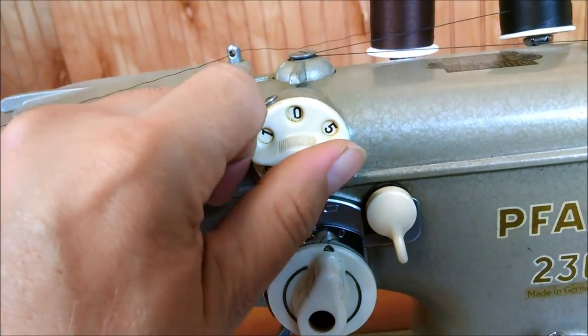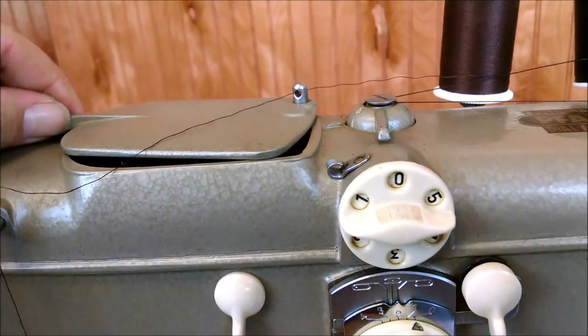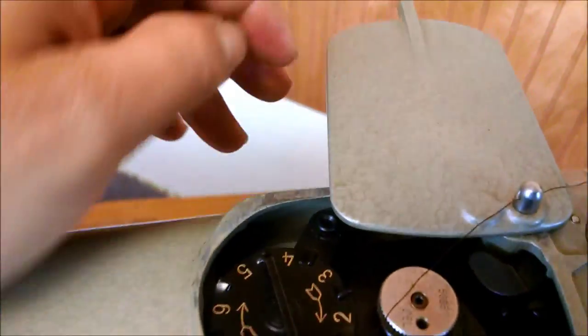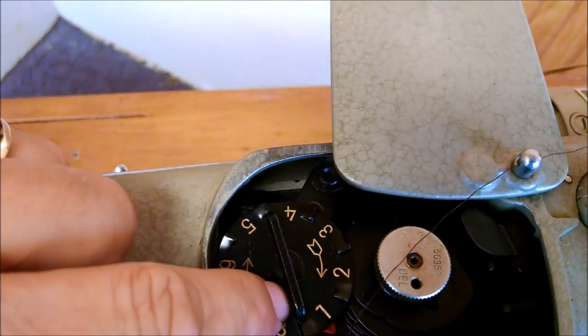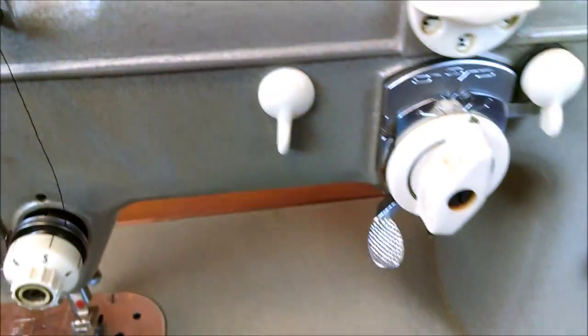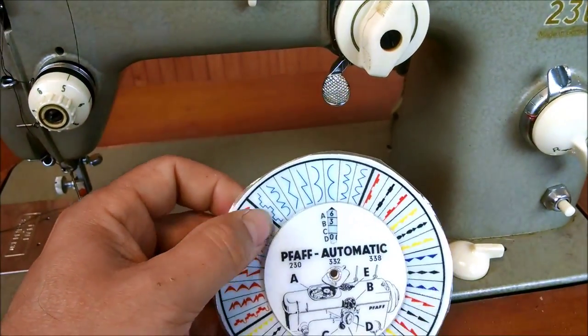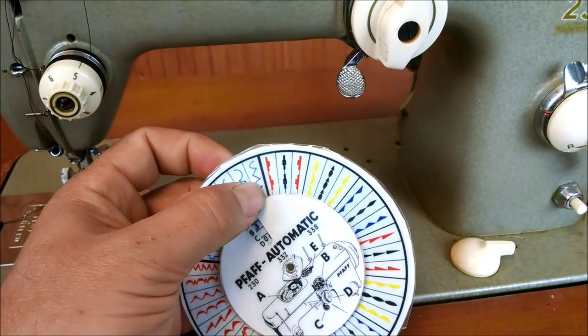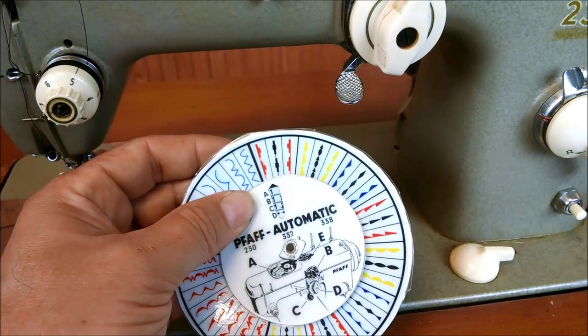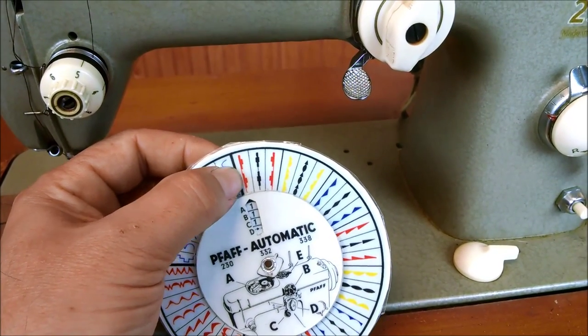This machine has several cam settings. If you turn, you have cam settings there and cam settings in here. And you play around with those. And it has a chart here that tells you your different stitch fills. And when you turn your chart, it tells you what to set your cams on to get that kind of fill.